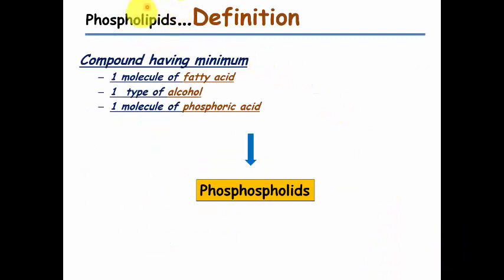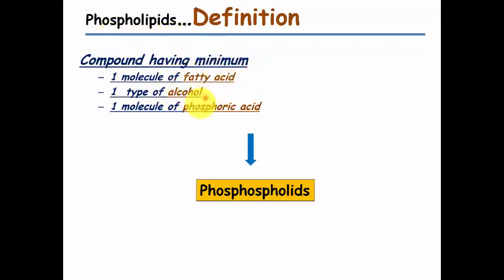Starting with the definition: as we all know, lipids must contain at least one molecule of fatty acid along with one molecule of any type of alcohol. These two combined are known as lipids. Here the name is phospholipids, which means along with the lipid it contains one molecule of phosphoric acid - that's why it is known as phospholipids.